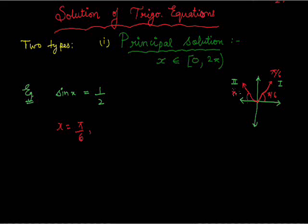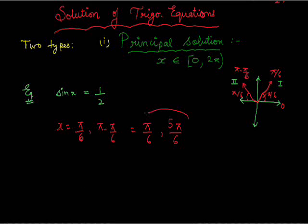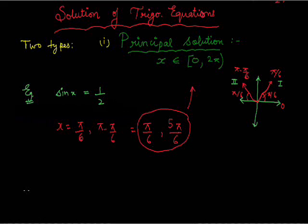Also, in the second quadrant, this angle is pi by 6. But we need to find this angle starting from 0, so when we move from 0 to this point it will be pi minus pi by 6. We have reached pi and then moved in the clockwise direction. So it's going to be pi minus pi by 6, which is 5 pi by 6. So pi by 6 and 5 pi by 6 both lie in the interval [0, 2π), therefore they are called principal solutions.